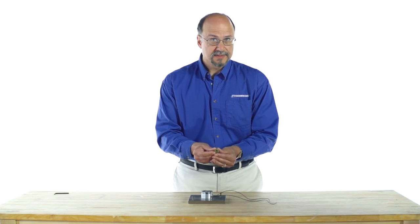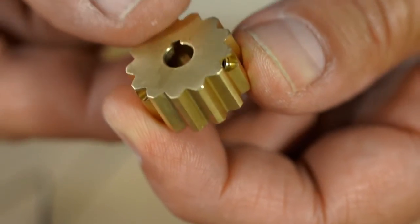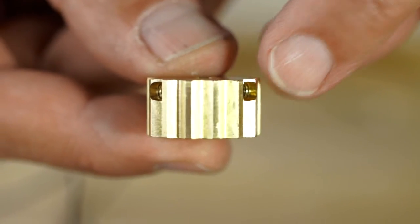The next step would be to take your hubs. The hub has a keyway and two set screws that are 120 degrees apart.